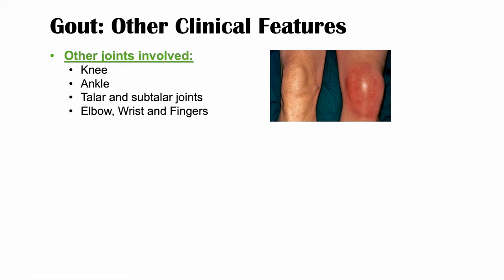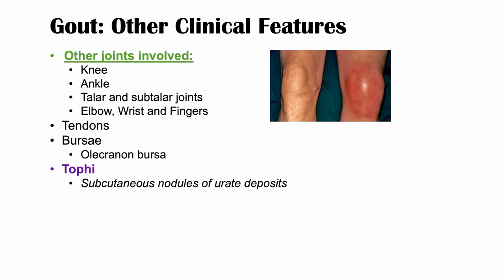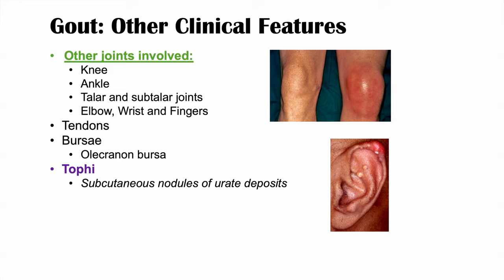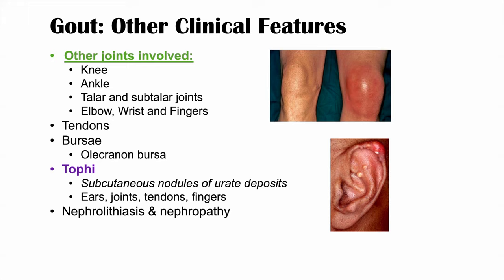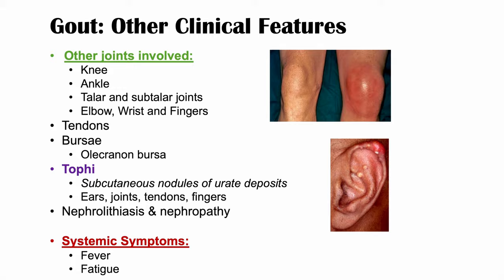Tendons and bursae can also be affected by gout through deposition of monosodium urate crystals. One commonly affected bursa is the olecranon bursa in the elbow. Patients with gout can also have tophi — subcutaneous nodules of urate deposits — often seen in the ears, joints, tendons, and finger pads. Gout can also cause nephrolithiasis (uric acid kidney stones), nephropathy with kidney damage, and systemic symptoms. When polyarticular gout affects two or more joints simultaneously, there can be widespread inflammation, fever, and fatigue.